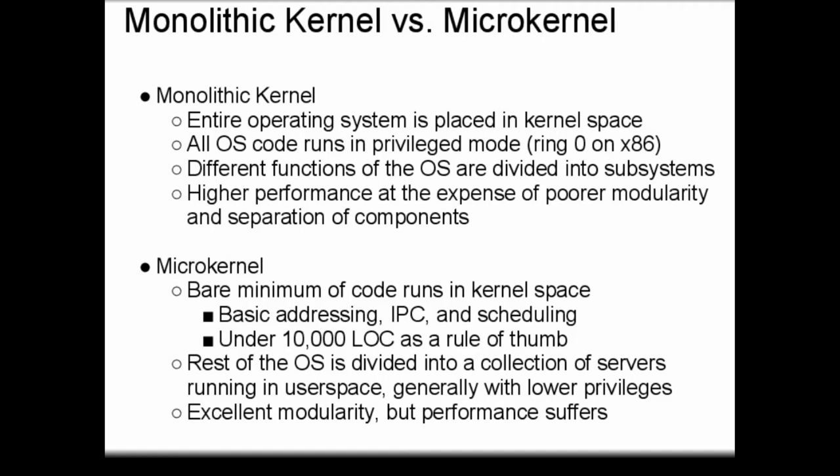A monolithic kernel is a kernel that contains the entire operating system in kernel space, runs all of the operating system code in privileged mode — or ring 0 on an x86 system — and divides the different functions of the operating system into subsystems of the kernel. All of these subsystems are run in the same memory space. This has the advantage of higher performance, but the disadvantage is that the kernel becomes less modular, more difficult to maintain, and components are not well separated — so a crash in one component could bring down the entire system.